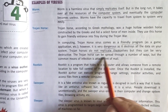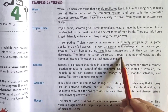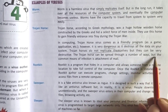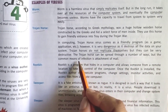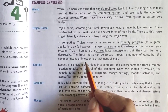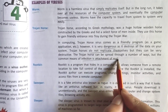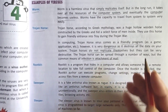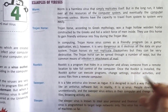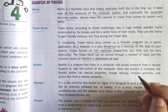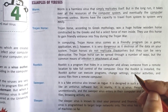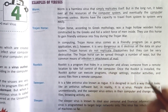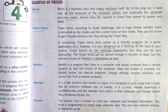The Trojan horse can spread in a number of ways, but the most common means is infection via email attachments. Whenever you send any attachment through email, Trojan horse viruses are mostly spread from one system to another system.